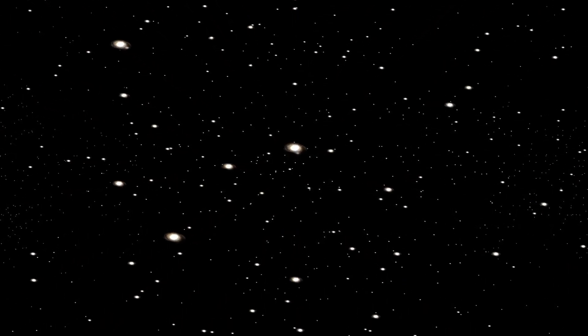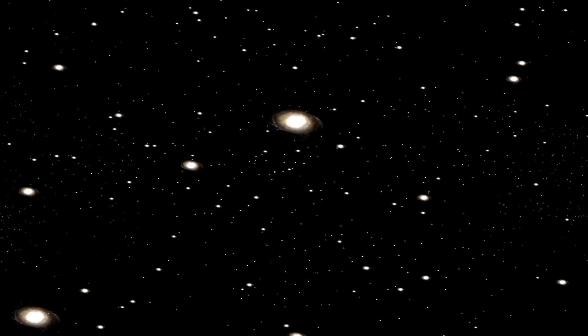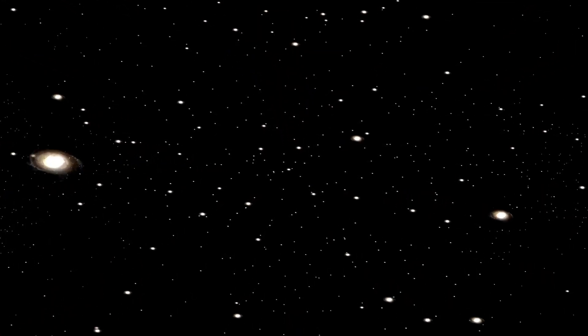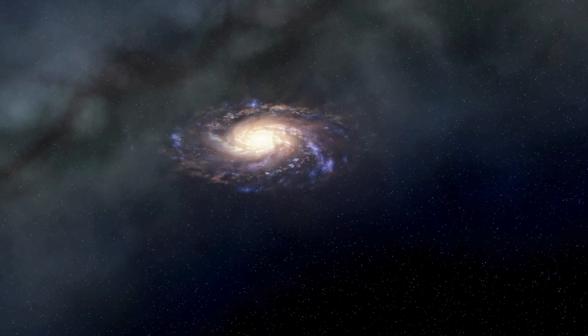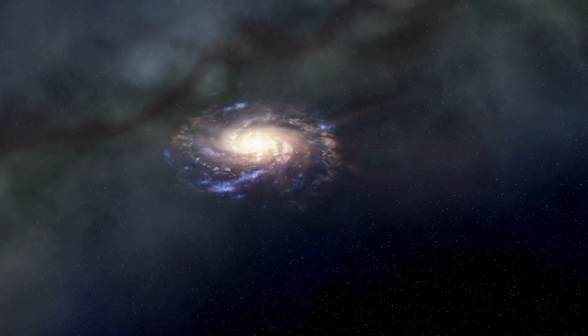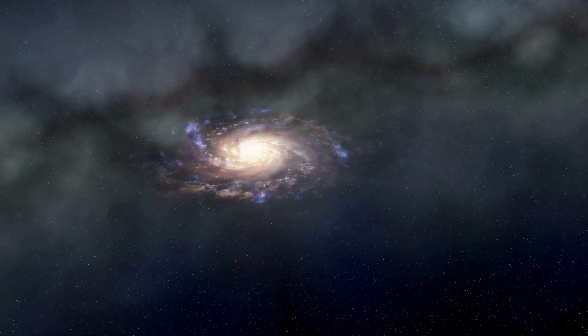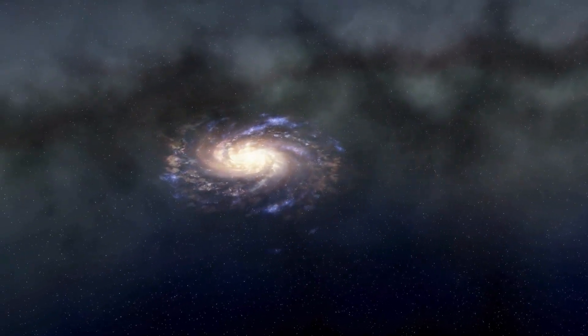However, Neptune isn't the only planet at play. Jupiter's gravity also plays a huge role in safeguarding Pluto's orbit, and Saturn contributes significantly as well. These simulations show that Jupiter's gravity alone is strong enough to ensure Pluto stays on a stable path for a very long time, even billions of years.